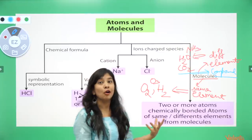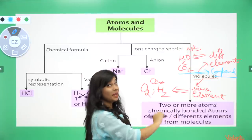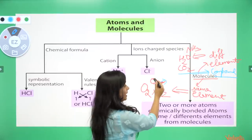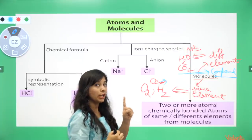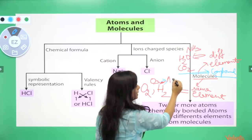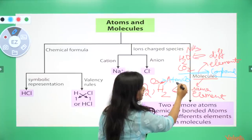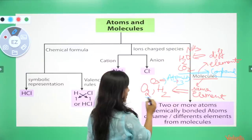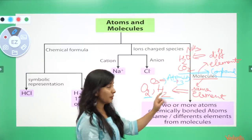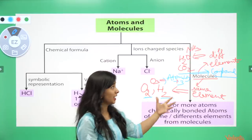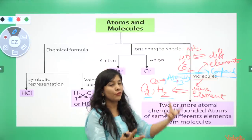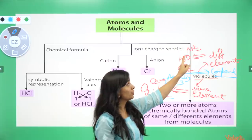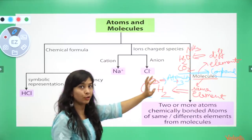One more concept that can come in your exam for one mark: atomicity. Atomicity is the number of atoms attached to make that molecule. For ozone (O₃), three atoms of oxygen combine to give one molecule, so its atomicity is 3. For O₂, atomicity is 2. For CO₂, one carbon plus two oxygens gives atomicity 3. For water (H₂O), two hydrogens plus one oxygen gives atomicity 3. For NH₃, one nitrogen plus three hydrogens gives atomicity 4.